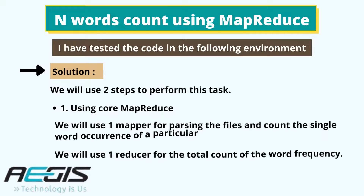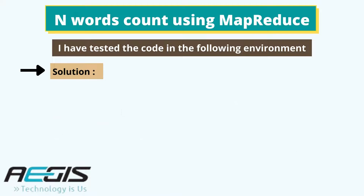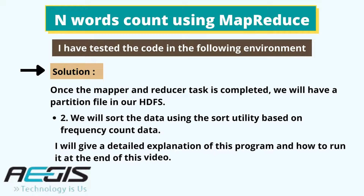Fifth is the solution. We will use two steps to perform this task. The first step is using core MapReduce — we will use one mapper for parsing the files and counting the single word occurrence of a particular word, and one reducer for the total count of word frequency. Once the mapper and reducer task is completed, we will have a partition file in our HDFS. The second step is to sort the data using the sort utility based on frequency count data.